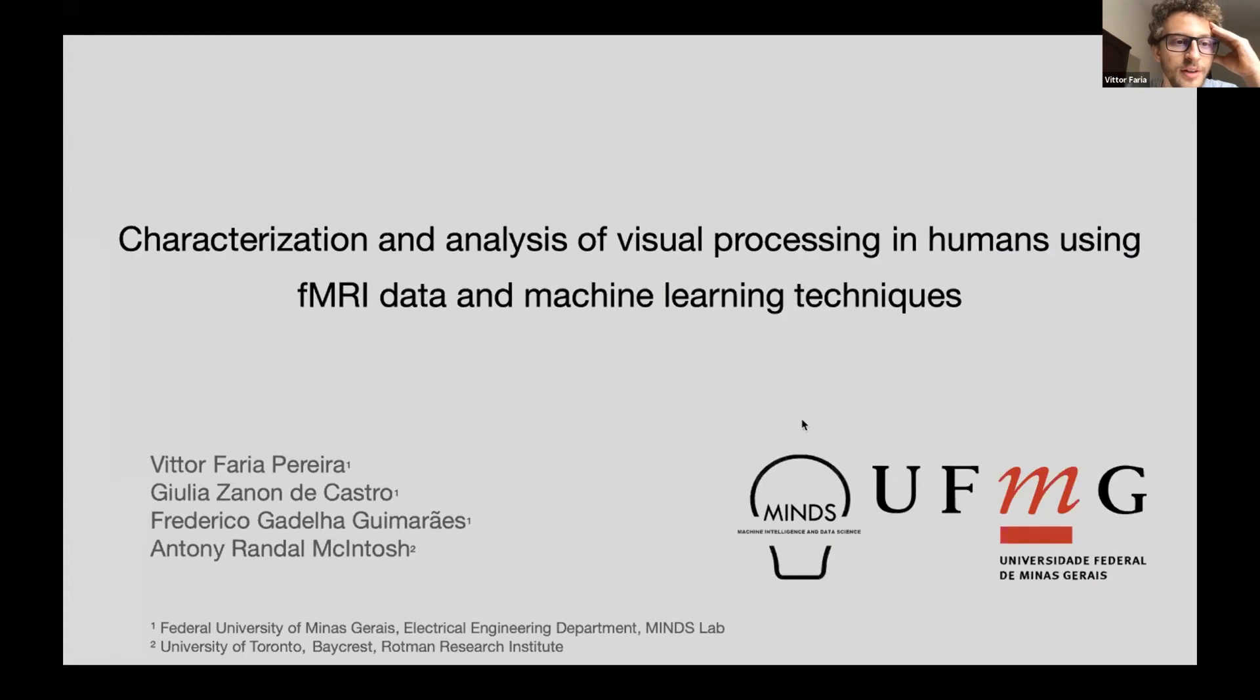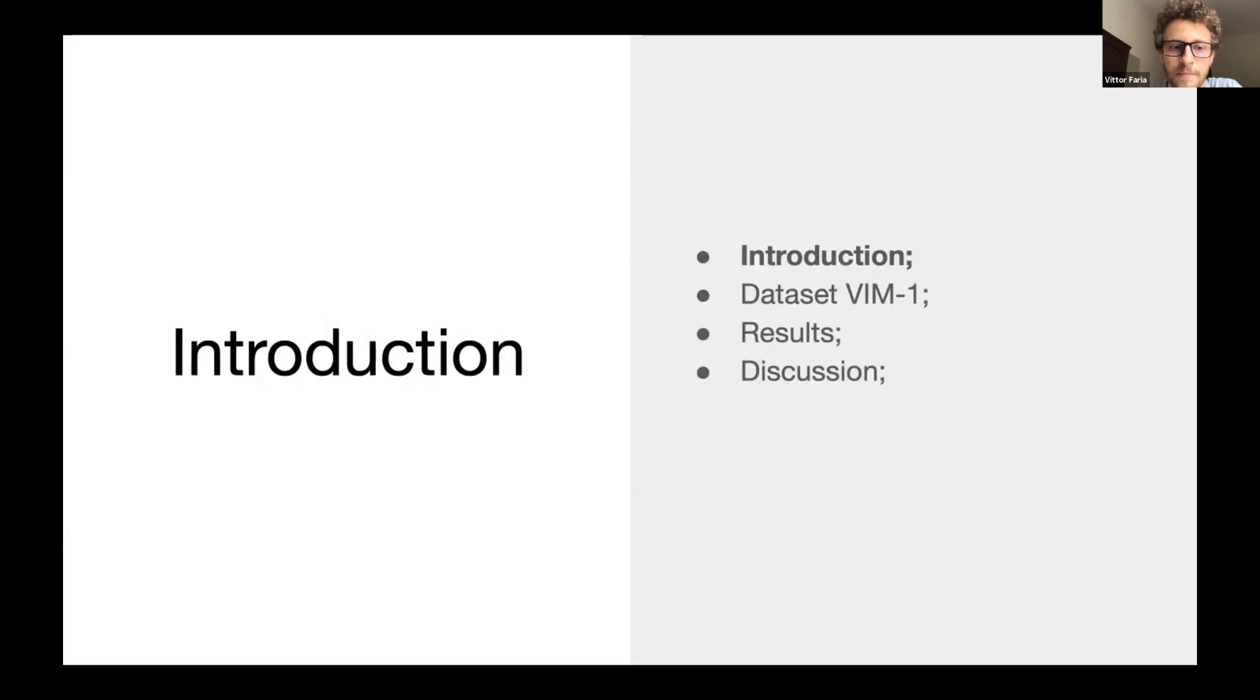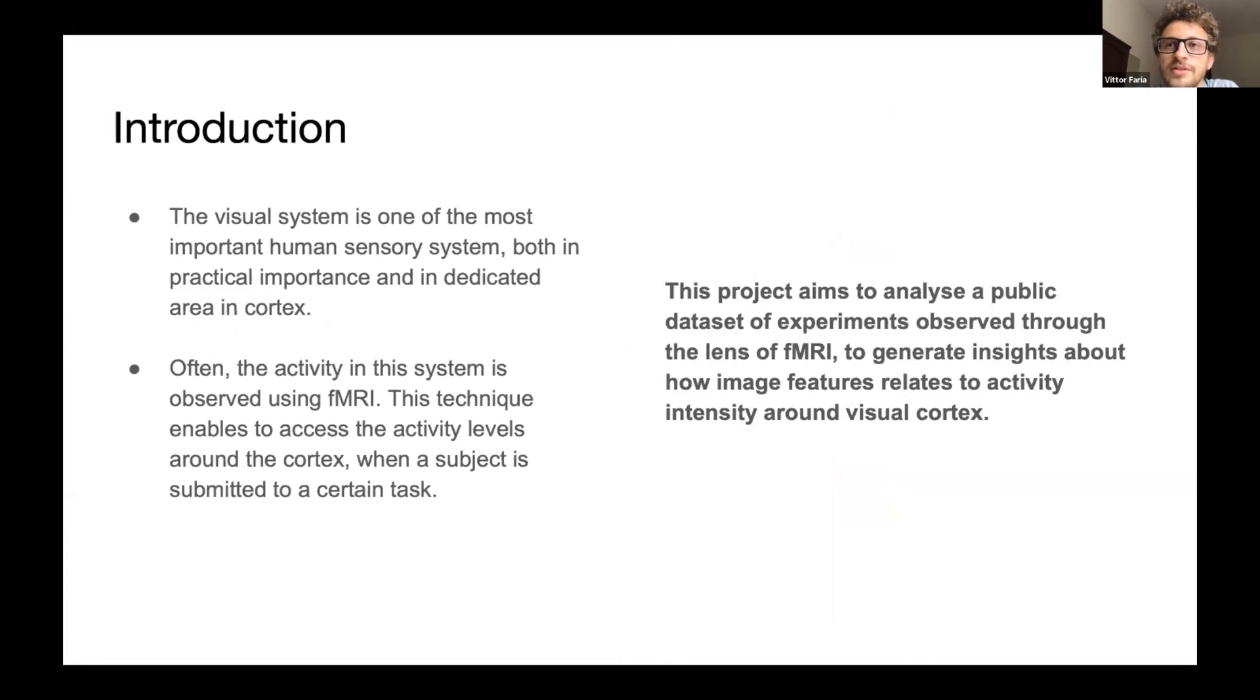Ready to start? So my name is Vito and I'll present my work with collaboration with Julius Zanon, Frederico Gadelli and Randy McIntosh from Universidade Federal de Minas Gerais and University of Toronto. An introduction first. The visual systems was the most important human sensory systems, both in practical importance and in dedicated area in cortex. The aim from this work is to generate insights about how image feature relates to brain activity by analyzing a public experiment dataset.